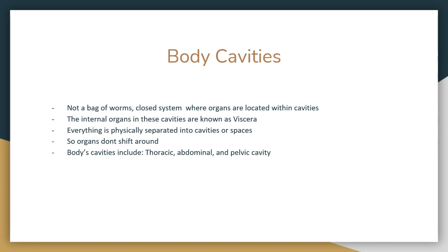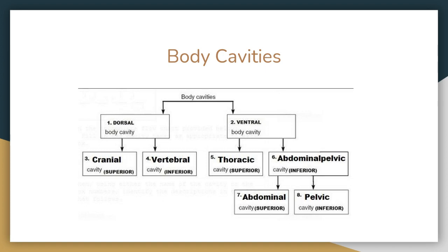Next we go on to body cavities. Our organs inside are not just a bag of worms — it's a closed system where organs are located within cavities, not shifting around whenever you move. The internal organs in these cavities are known as viscera. Everything is separated into cavities or spaces, not all mushed together, so your organs don't shift around. The body cavities include thoracic, abdominal, and pelvic. Remember your directions: dorsal and ventral tell you which organs are in which cavity.